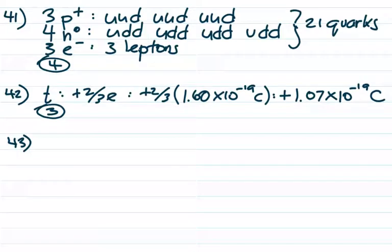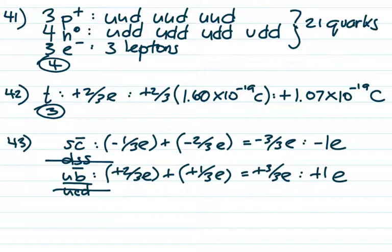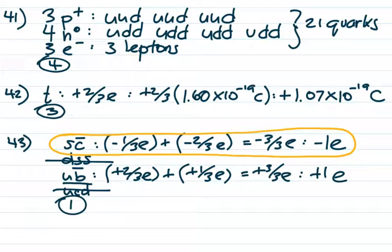Number 43: looking for a meson of negative one. A meson is a quark and an anti-quark, so it's either choice one or three. Choice four with three anti-quarks would be an anti-baryon, not a meson. Working out the math: strange is negative one-third and charm is positive two-thirds, but anti-charm is negative — so strange plus anti-charm gives negative one e. Up plus anti-bottom gives positive one e. Since we need negative one, that's choice one. Also note: if your quark combination doesn't come out to a whole number of charge, you know you made an error — any baryon or meson must have a whole number of charge in elementary charges.